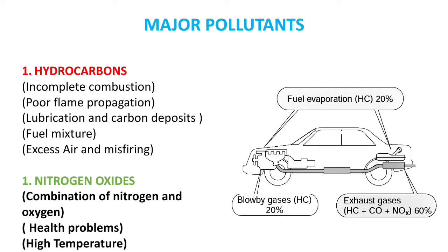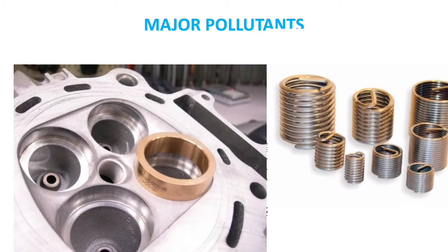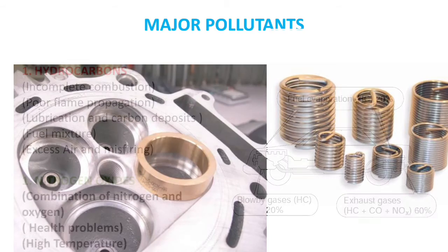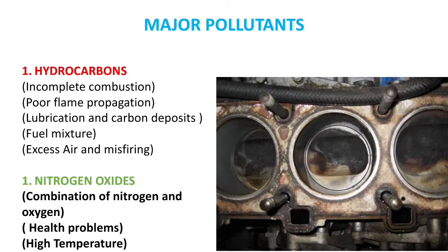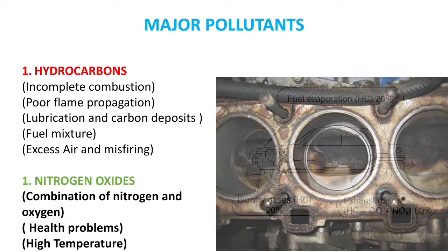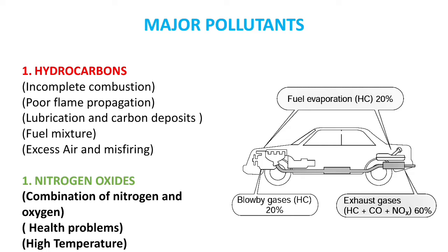Another source of HC emission is evaporative emission. Flame propagation hardly occurs at the top of the piston ring and cylinder walls, also spark plug threads and valve seats. Fuel is also absorbed by the lubrication oil on the cylinder wall and by carbon deposits in the combustion chamber.